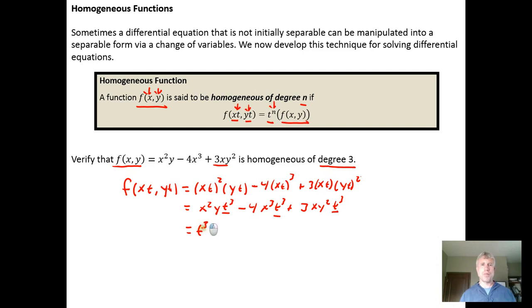So we factor that t cubed off which is going to leave behind x squared times y minus 4x cubed plus 3xy squared. And then we want to inspect this and if we inspect this and see that it's just the original equation f of xy then we can replace it with t cubed times f of xy.